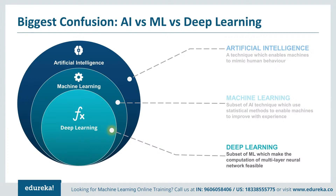Now coming to deep learning: deep learning is a subset of machine learning where similar machine learning algorithms are used to train deep neural networks, so as to achieve better accuracy in those cases where the former was not performing up to the mark. I hope you now understand that machine learning, AI, and deep learning are all three different.